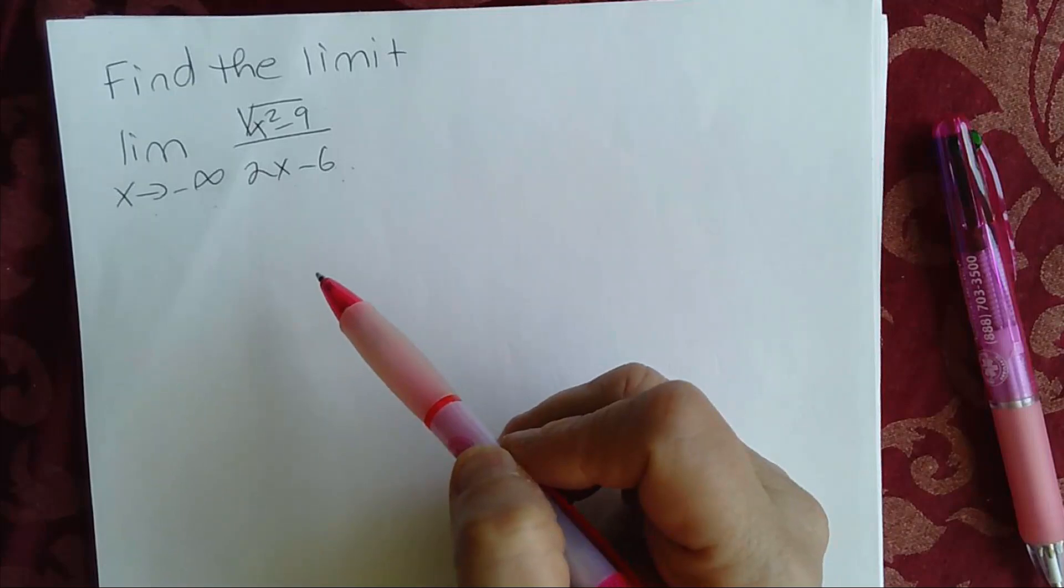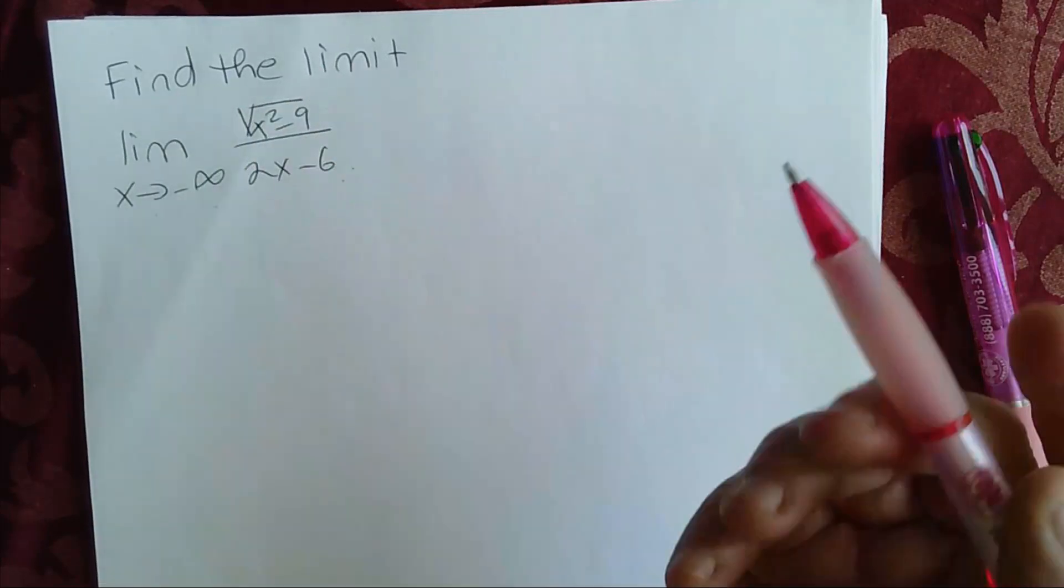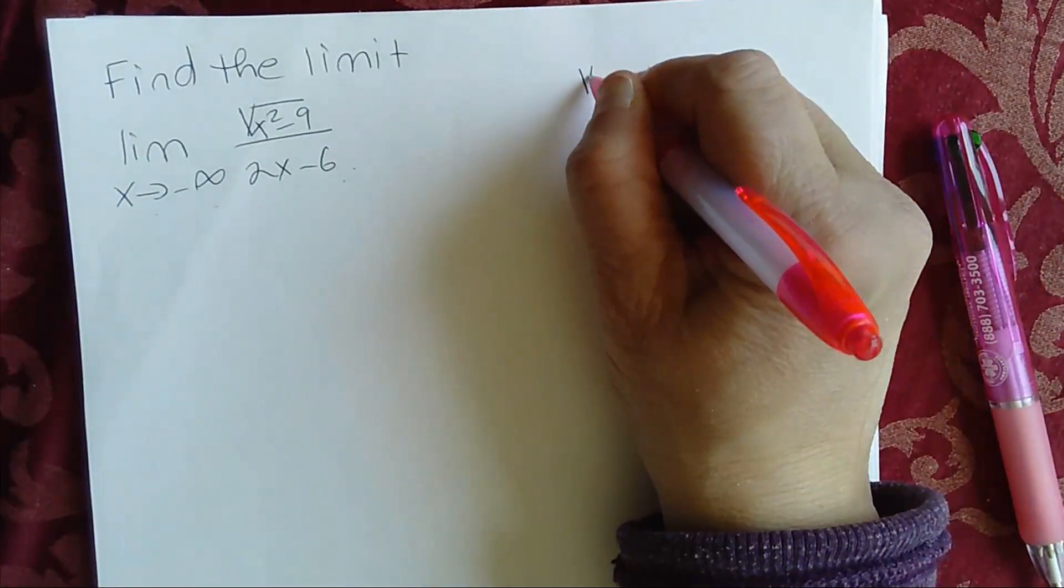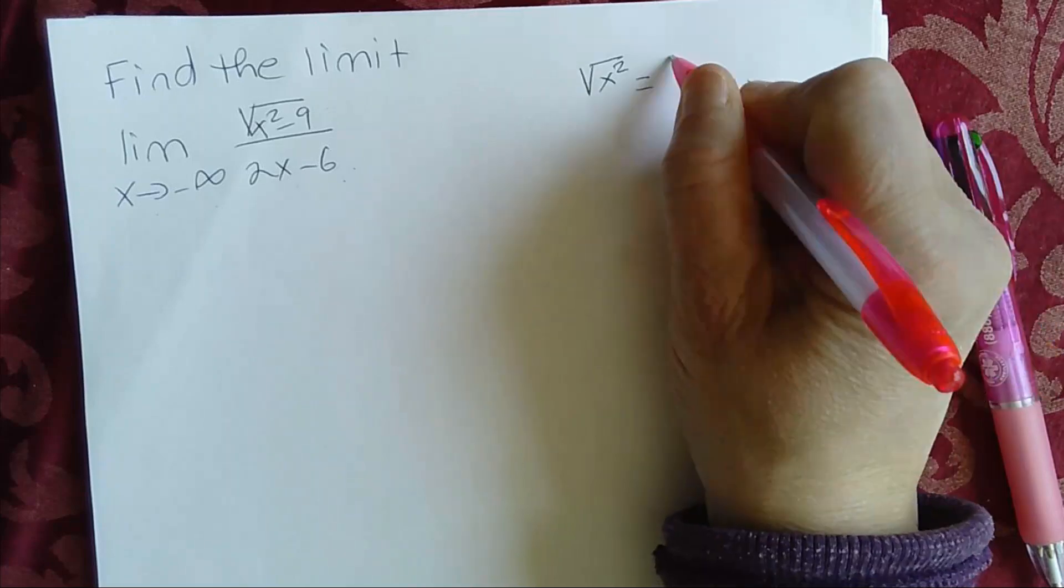But here you have to be careful because you have a square root. To remind you, square root of x squared from algebra is equal to absolute value of x.